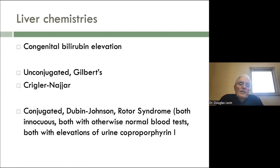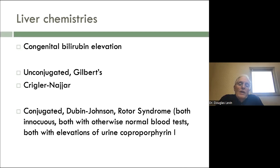Congenital unconjugated bilirubin elevations are present in Gilbert's syndrome — an inherited condition where the body metabolizes bilirubin 67% less efficiently. It's really a condition, not a disease; you may get more gallstones, but bilirubin is an antioxidant and you may actually be healthier. Crigler-Najjar is quite different — it presents in childhood and is very serious. There are also conjugated hyperbilirubinemias: Dubin-Johnson and Rotor syndrome, both relatively rare but innocuous, with otherwise normal liver chemistries. Both can be diagnosed with elevations of urine coproporphyrin one. I've only seen one Rotor syndrome in my life, but you do see Dubin-Johnson from time to time.